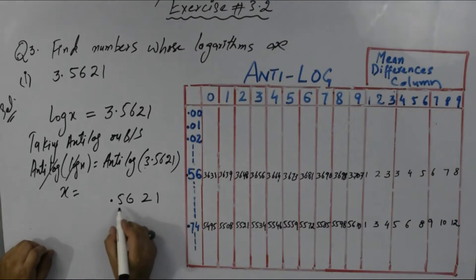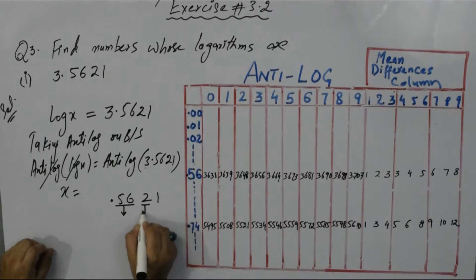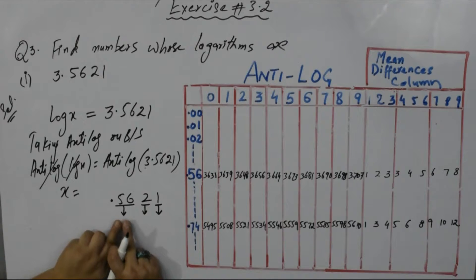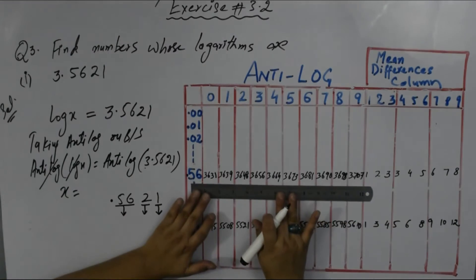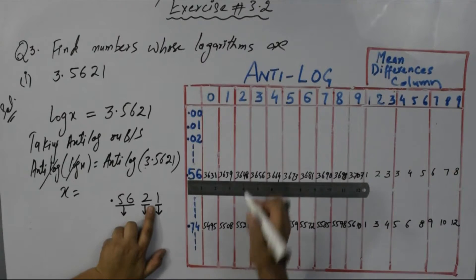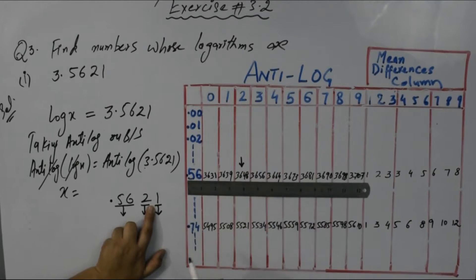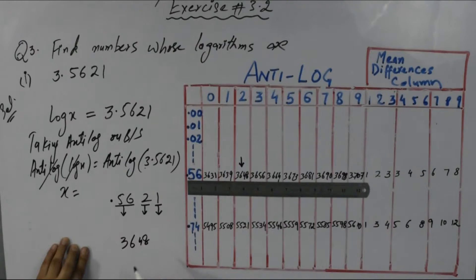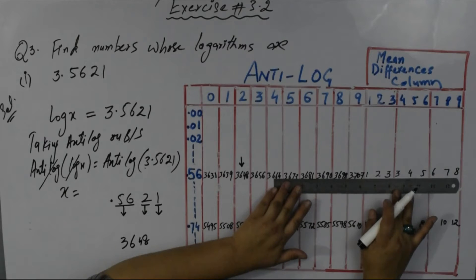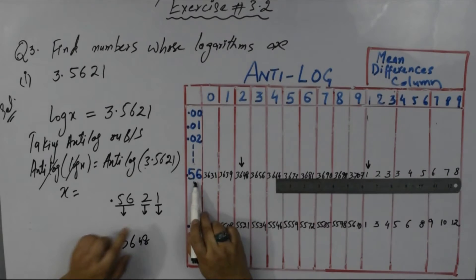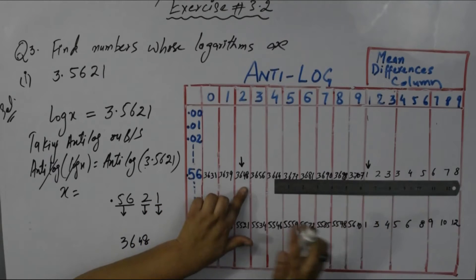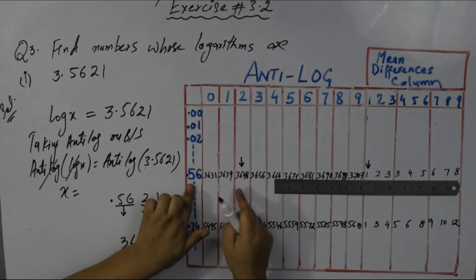This mantissa 0.56 to 1 - we make three parts. This is first part: check 0.56 in second column, third number is 2 which we will add from mean differences column. Look at 0.56 row - its value is 3648.